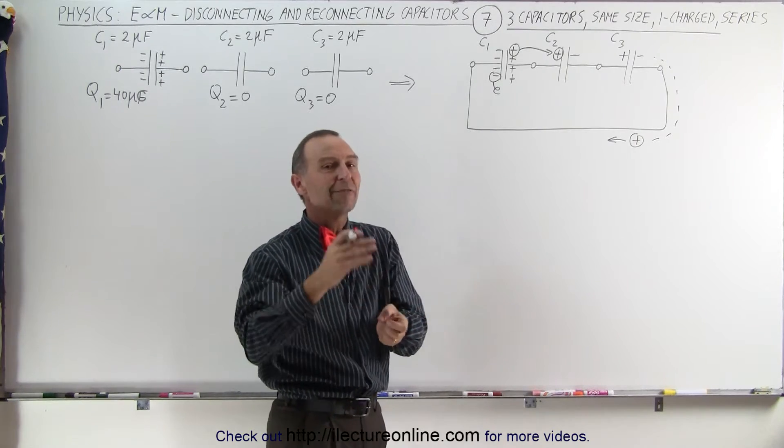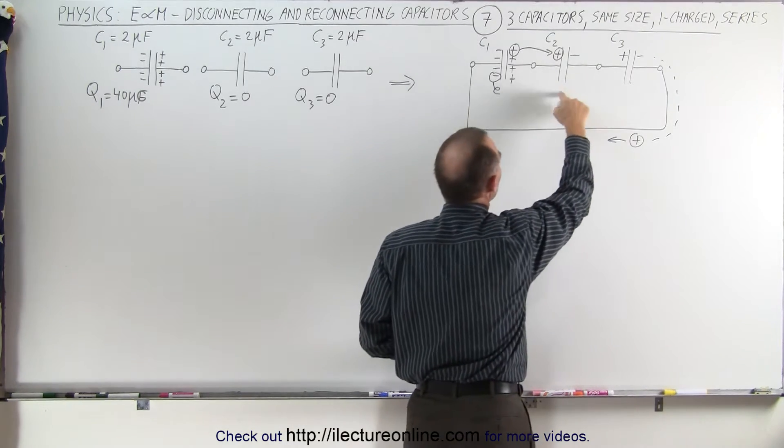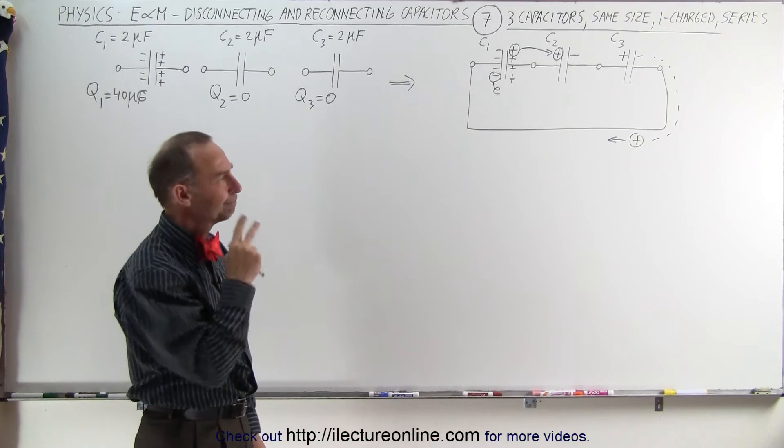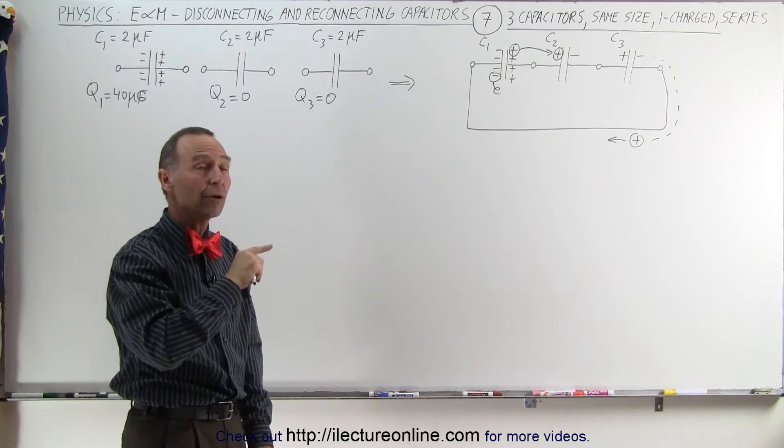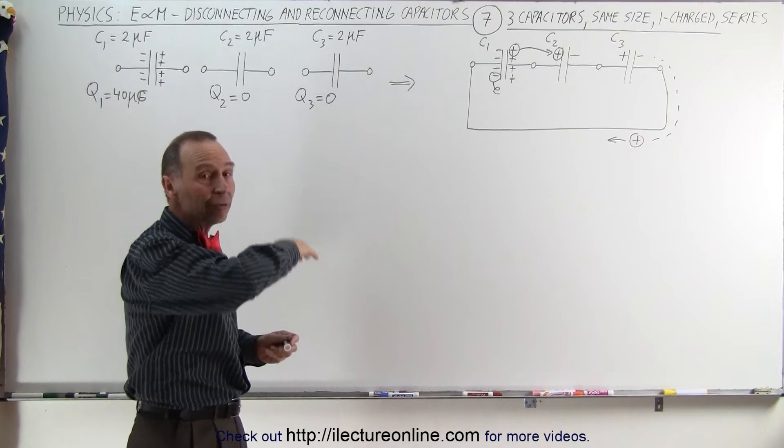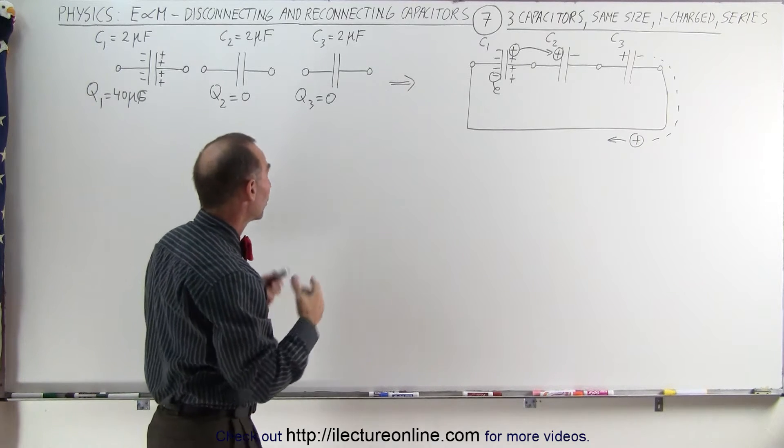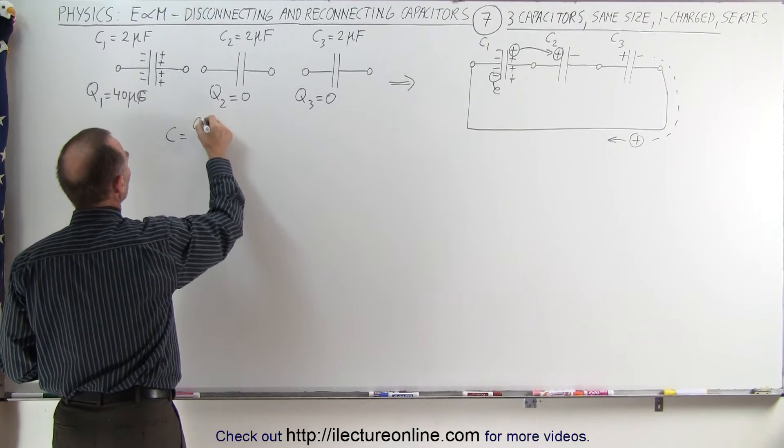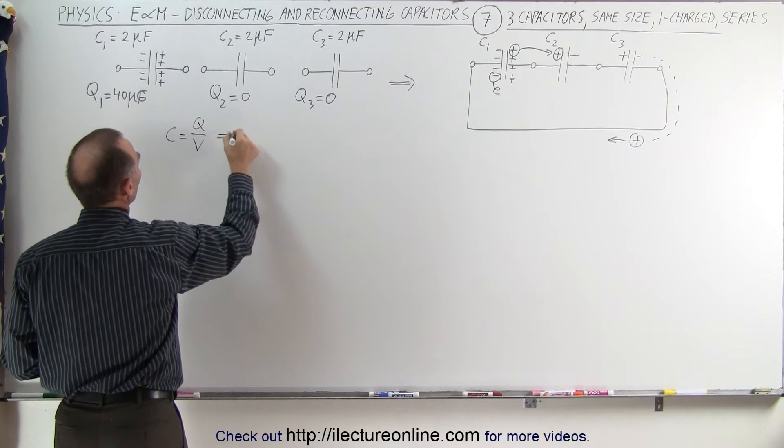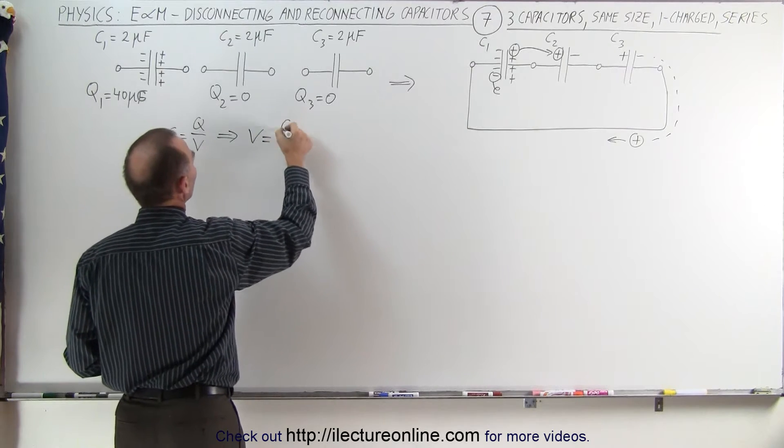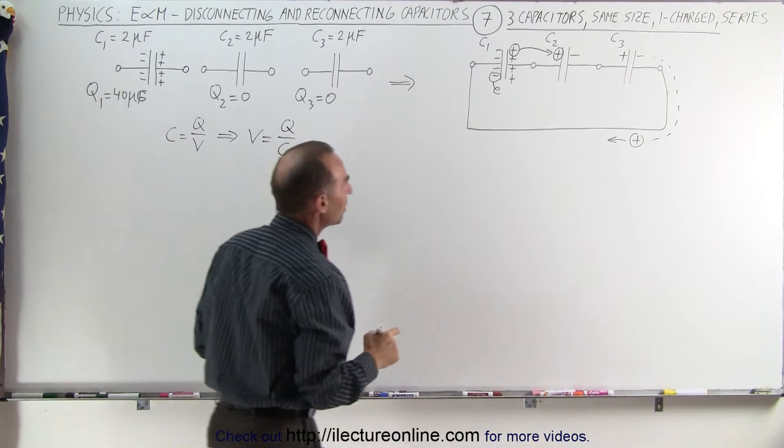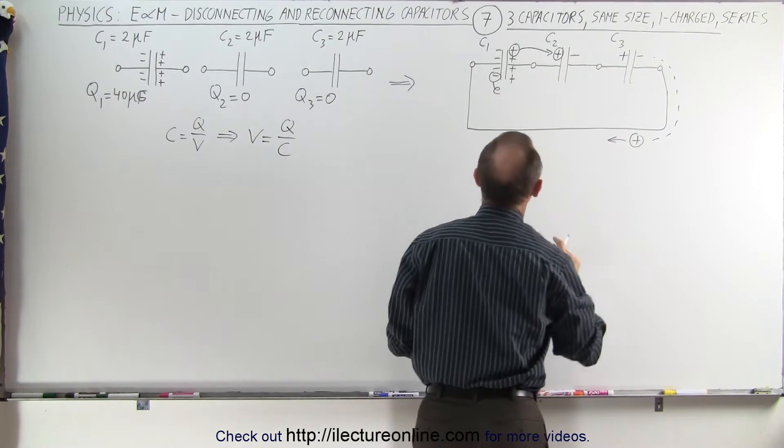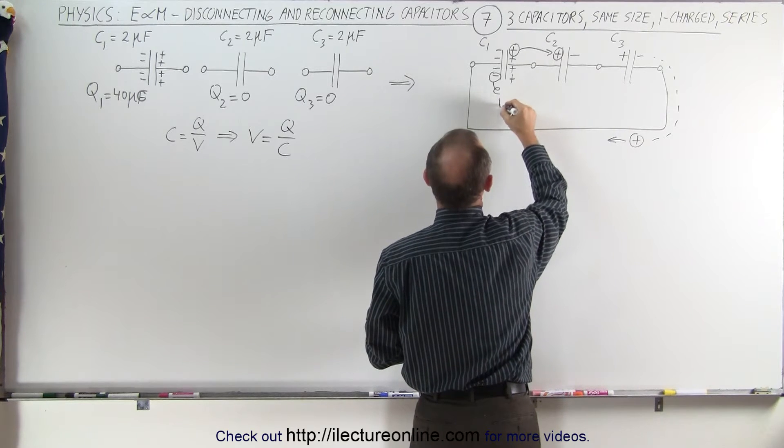The question is, what will be the final charge on each of the three capacitors when equilibrium is reached? How do we do that? Remember on the last videos, with just two capacitors, we ended up adding the voltages around the circuit. We're going to do that here. The definition of capacitance is that it equals the ratio of charge divided by voltage, which means that voltage equals the charge divided by the capacitance. When we add up all the voltages, we can make this relationship work.